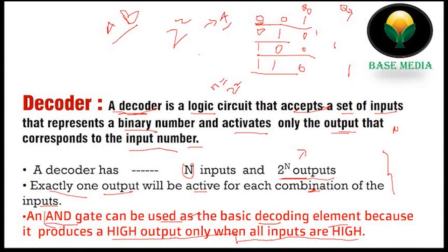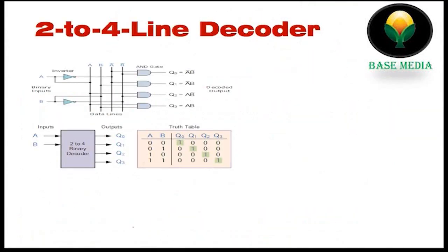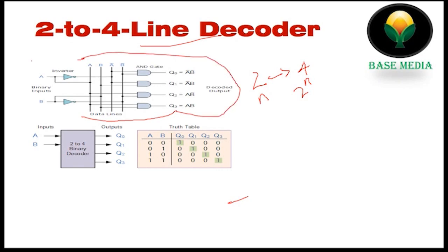So the definition: if you have n inputs, the output is 2 to the power of n. The first combination, the second combination, the third combination — each corresponds to a specific activation element.